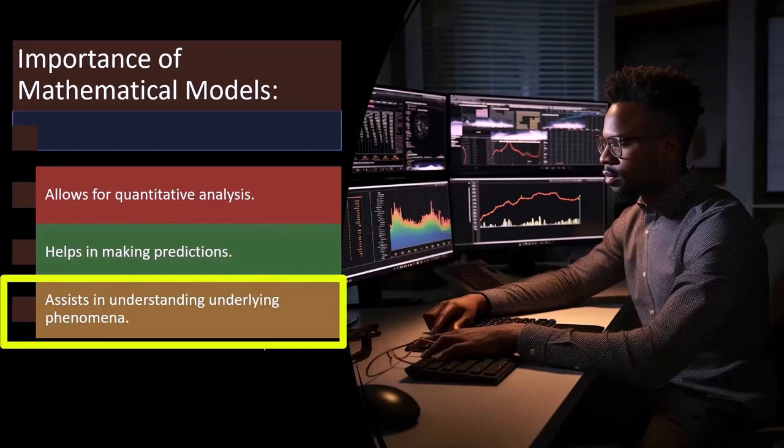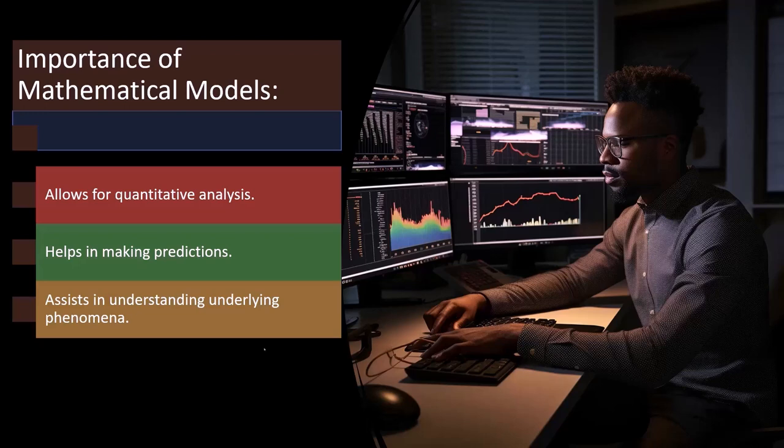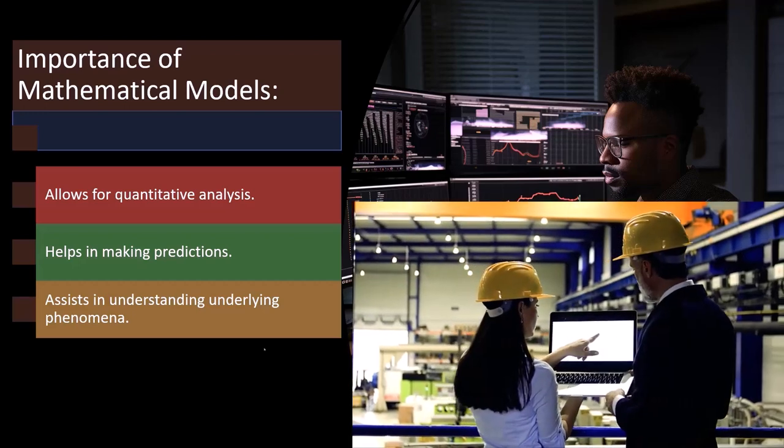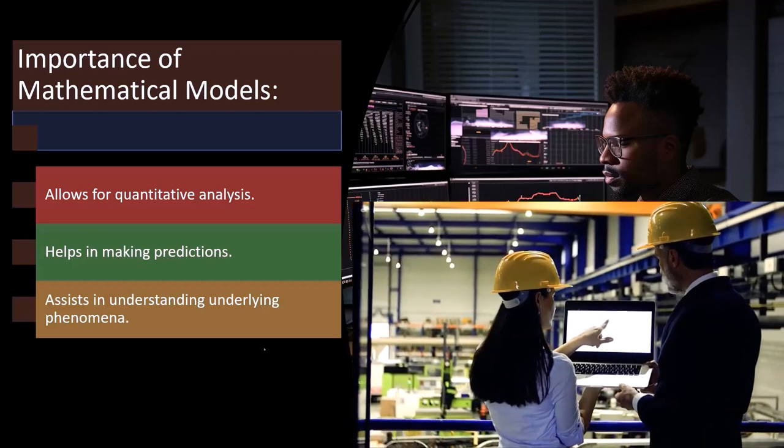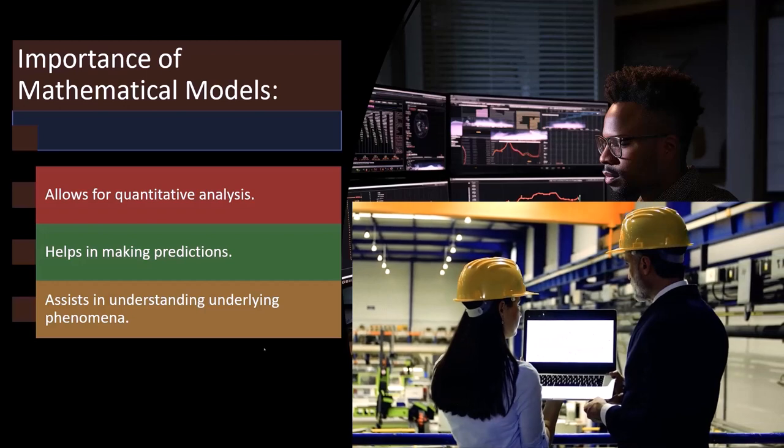This helps making predictions and assists in understanding underlying phenomena. If we know the characteristics of what goes into a particular curve normally and we see that some data is following that curve, then that might give us some better understanding about actually what is happening within the world.